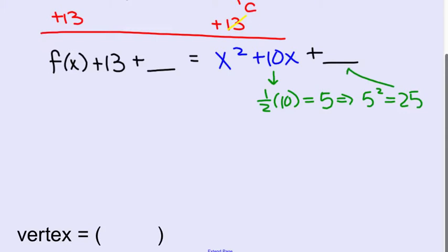We are going to add 25 here. To balance out the equation, we're going to add 25 there. So now on the left we have the function, and now we're going to add the two terms together on the left. 13 plus 25 is 38.